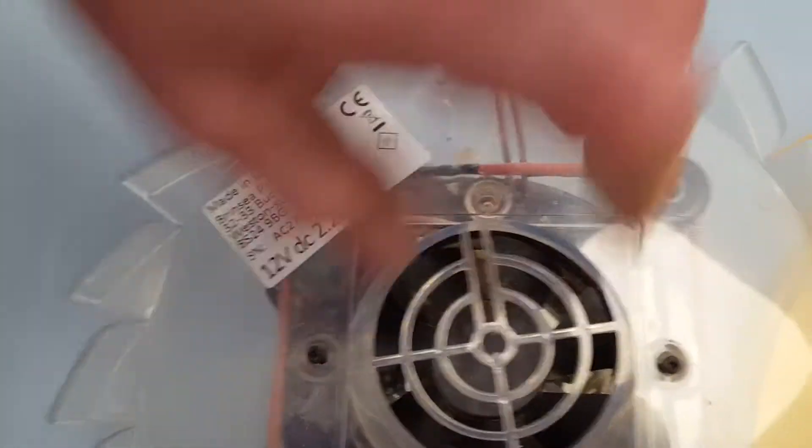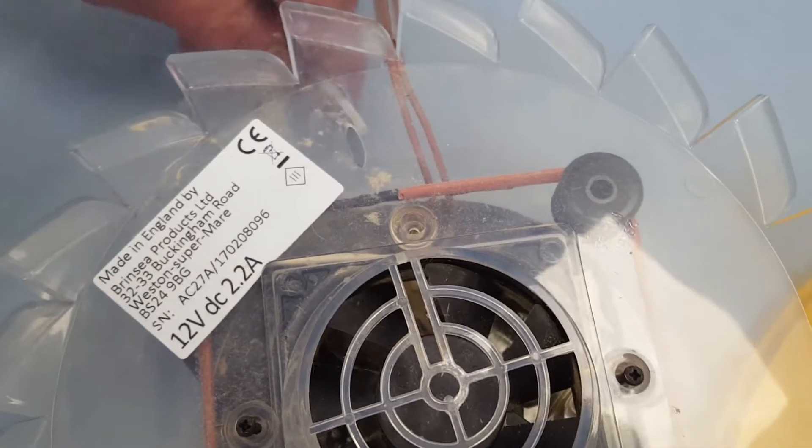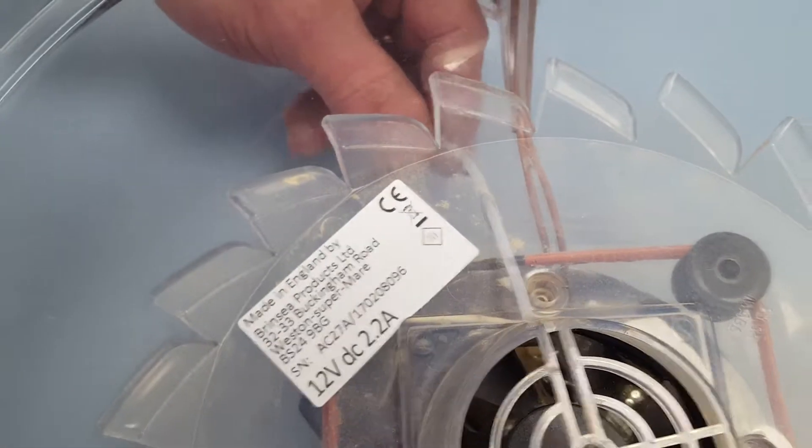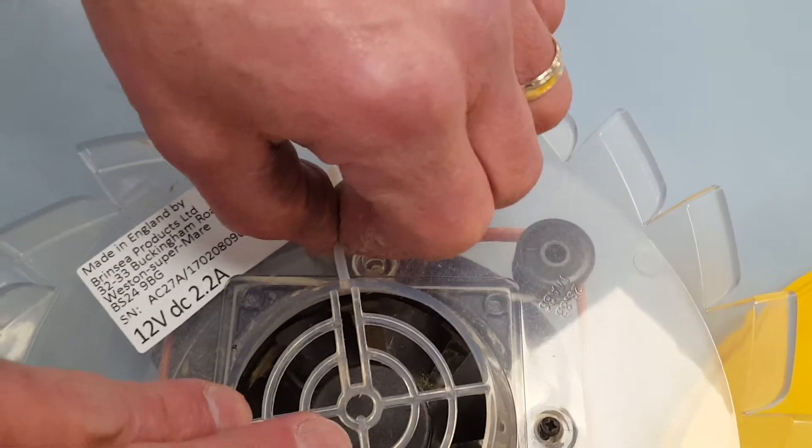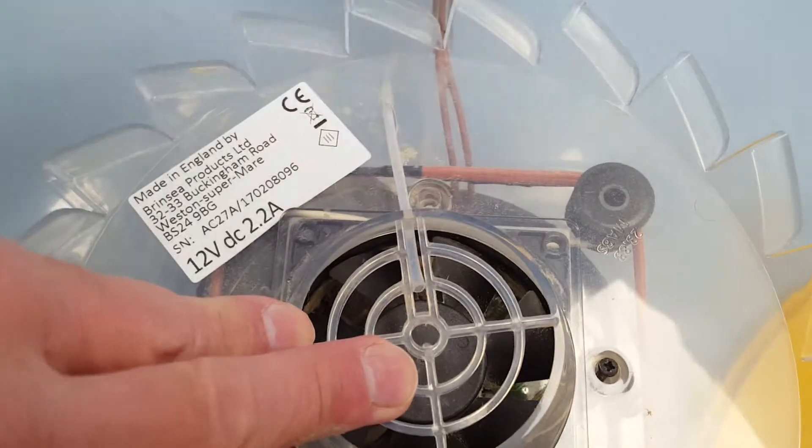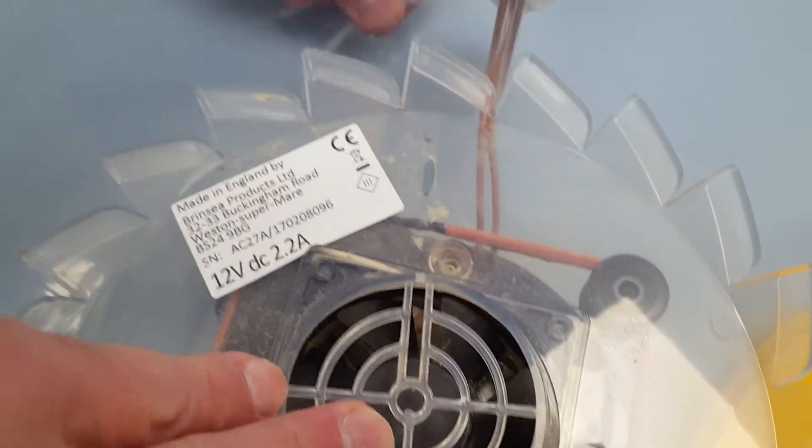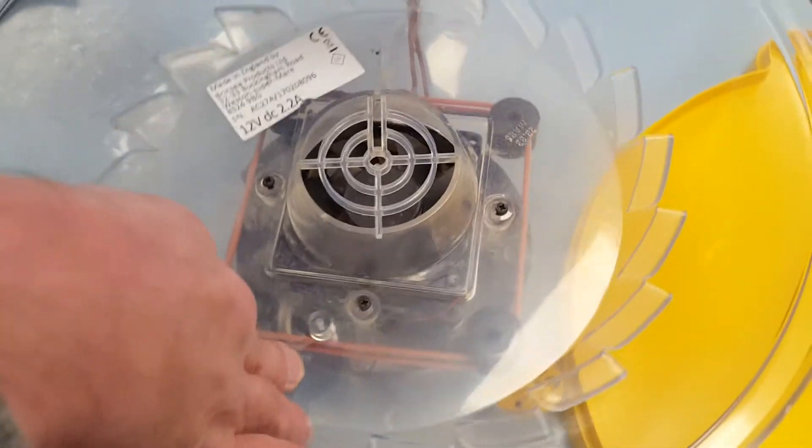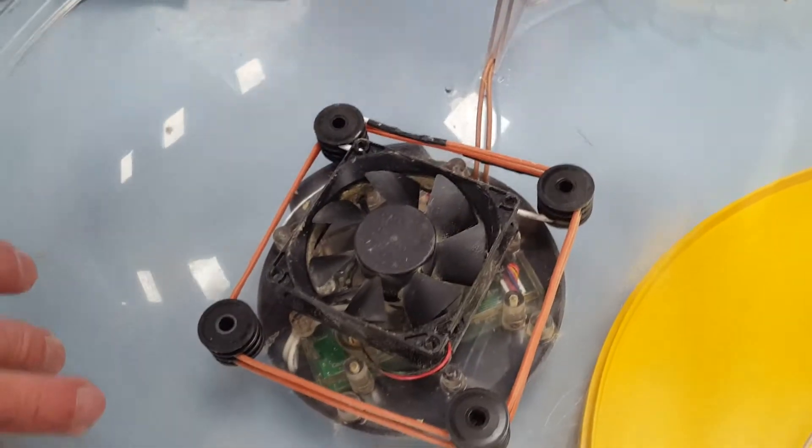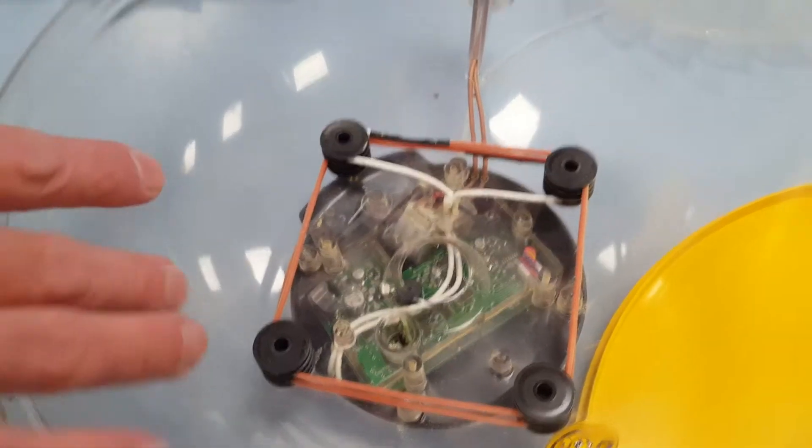For the EX model you have to make sure when you put the inner case back that sits on the top over the fan, those two holes line up so you can put the tubing back. Because the tube needs to go, you need to make sure those holes line up there.